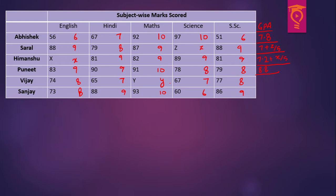For Vijay there is a variable y and the sum of the other four is 30, so GPA is 6 plus small y by 5. For Sanjay there is no variable; sum is 42, so GPA is 8.4. For Himanshu it is 36 plus small x divided by 5, giving 7.2 plus small x by 5. The GPAs of Saral, Himanshu and Vijay are yet unknown because of the variables, but GPAs of Abhishek, Puneet and Sanjay are clearly known.